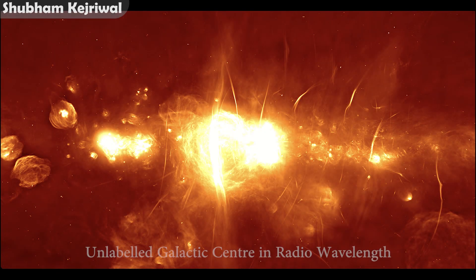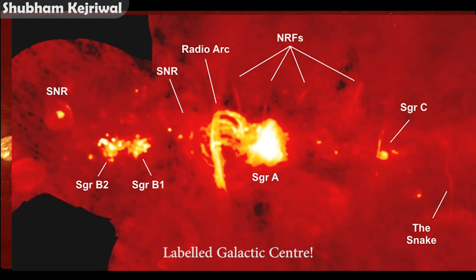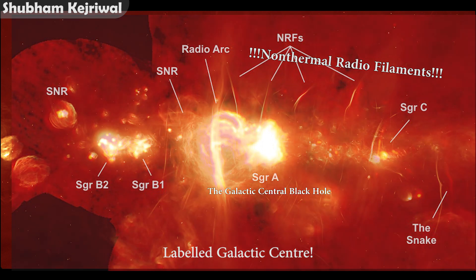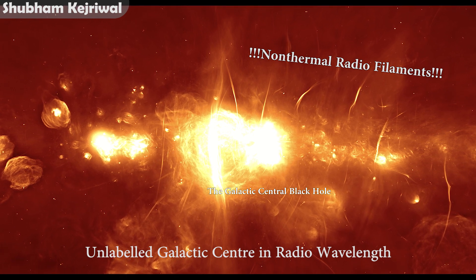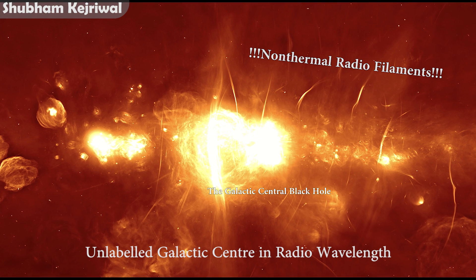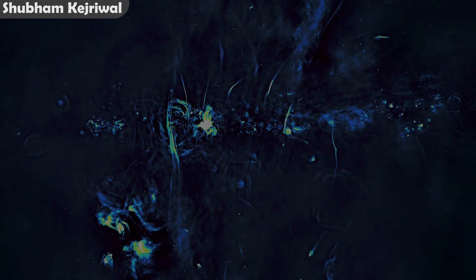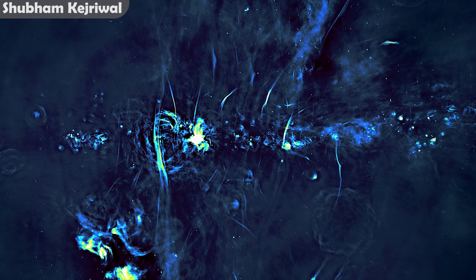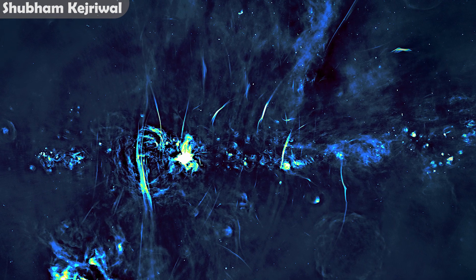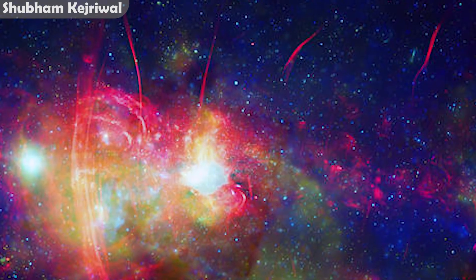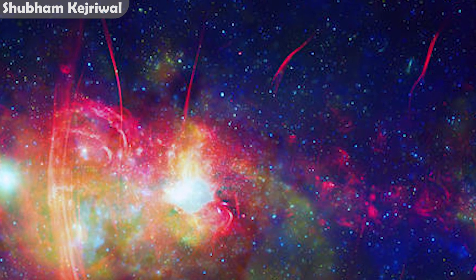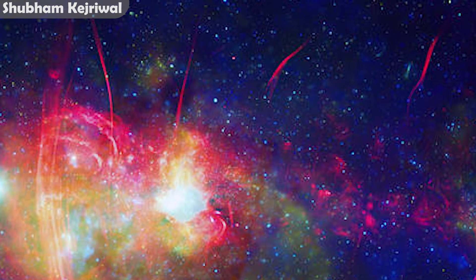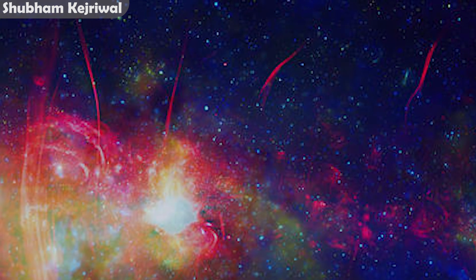Specifically in the galactic center region, there is a presence of long filament-like structures called non-thermal radio filaments. As the name suggests, they do not have thermal properties but illuminate specifically in the radio frequencies. It is predicted that these non-thermal radio filaments are present in zones of extreme magnetic fields of up to 1 milligauss in the central galactic region. They seem to have magnetic field strengths of about 1 milligauss, which scaled to the parsec-long size of these radio filaments contains energy equivalent to that of 3,000 to 4,000 supernova remnants.